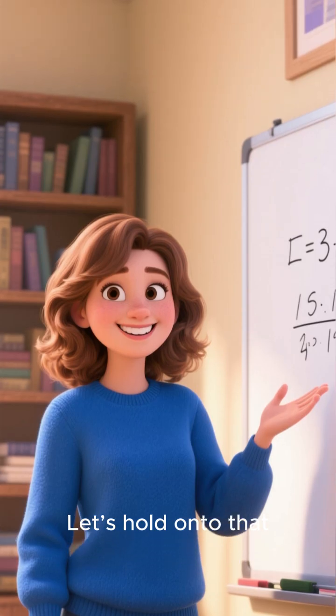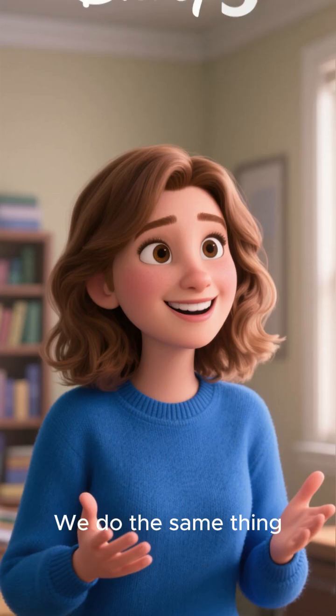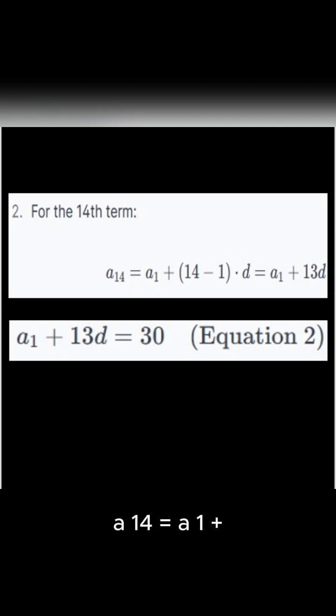Let's hold on to that. Second, the 14th term is 30. We do the same thing. a_14 = a_1 + (14-1)d. This means our second equation is a_1 + 13d = 30.